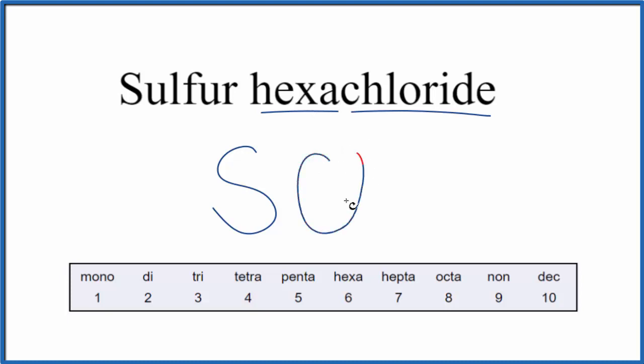Chloride is the chlorine atom. And then hexa means 6. So the formula for sulfur hexachloride is SCl6.